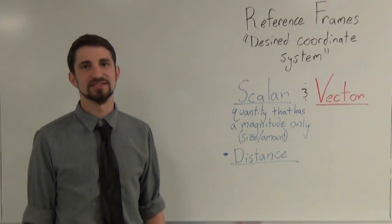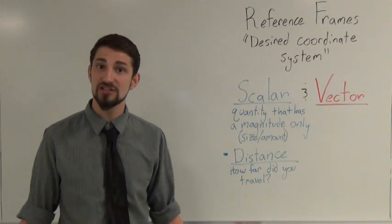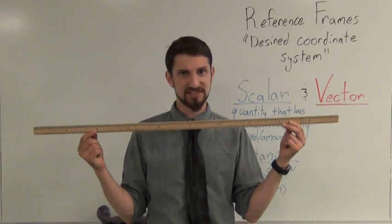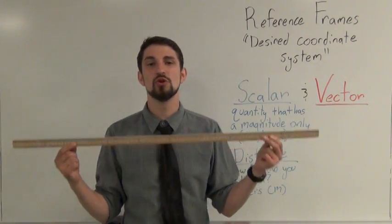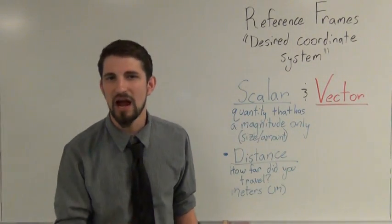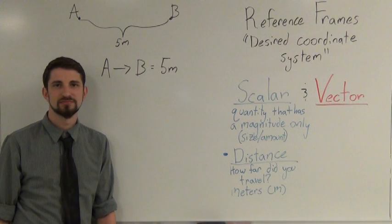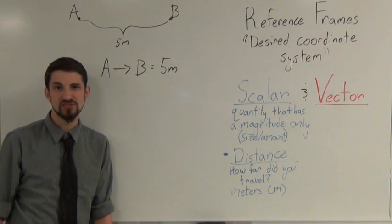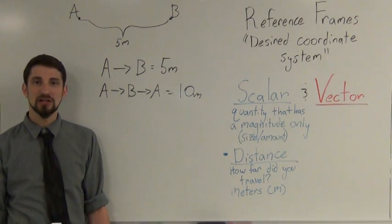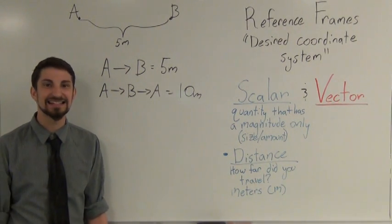One scalar we're going to look at is distance. Distance is just how far you traveled in total. We're going to be measuring distance using meters — that's the SI unit for distance. Remember, distance is a scalar, so direction doesn't matter. If you went from point A to point B, your total distance is 5 meters. But if you went from A to B and back to A, your total distance is 10 meters, even though you went backwards.